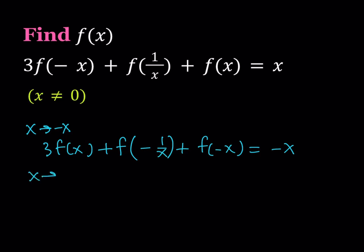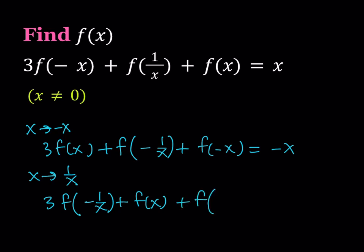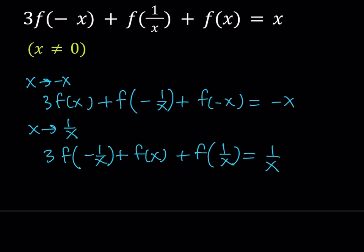Next I'm going to replace x with 1 over x, and that should give me: 3 times f of negative 1 over x, plus — since 1 over (1 over x) is just x — f of x, plus f of 1 over x, equals 1 over x.